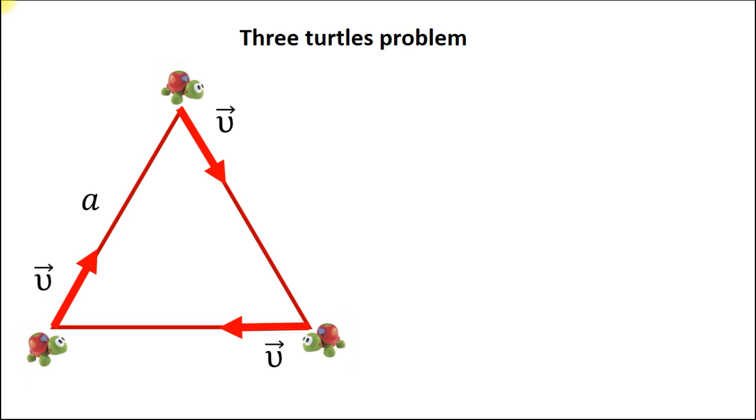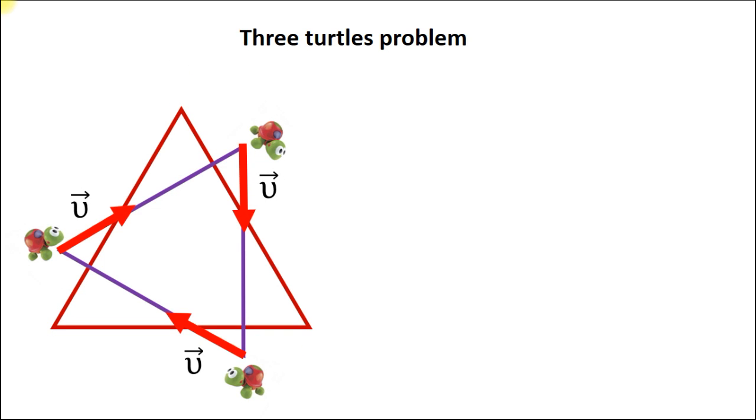So at the next moment after each turtle moves the same distance, it still directs its motion towards the adjacent turtle. So our triangle rotates and decreases in dimensions, but it still remains equilateral due to the symmetry of the situation.